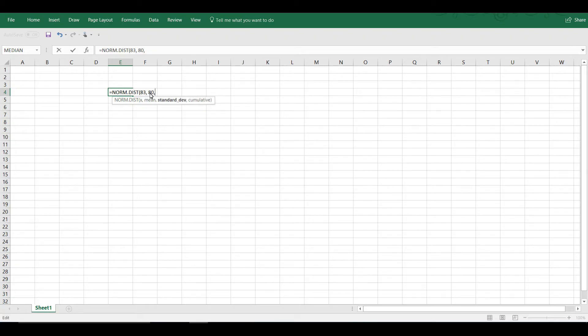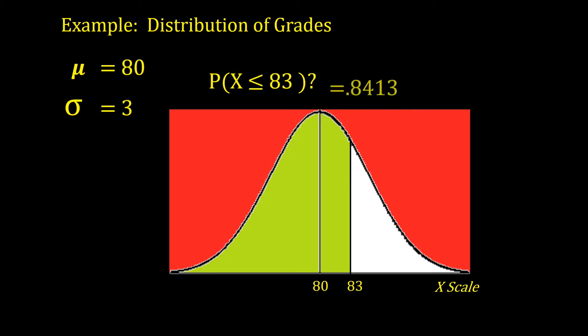Sigma, the standard deviation, is 3, and we do want it to be cumulative so we type in TRUE. Close parentheses, hit return, and we get 0.841345, or 0.8413. So using Excel we get 0.8413, and the area under the curve cumulative below or at 83 is 84.13 percent or 0.8413.